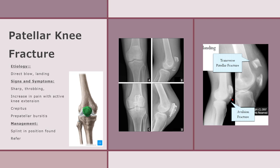Bipartite patella is a congenital condition, present at birth, that occurs when the patella is made up of two bones instead of one. Normally the two bones would fuse as the child grows, but in bipartite patella they remain as two separate bones. Individuals with a bipartite patella are often confused as having a fractured patella, and X-rays can help distinguish this condition.